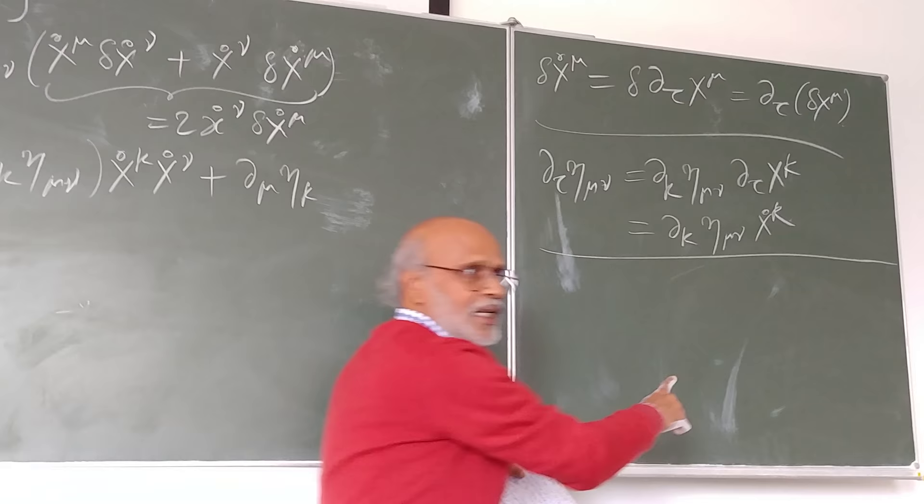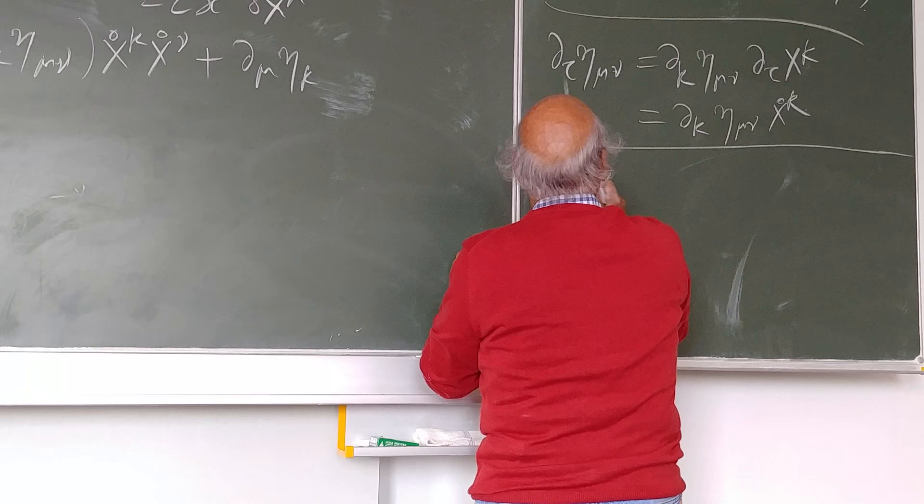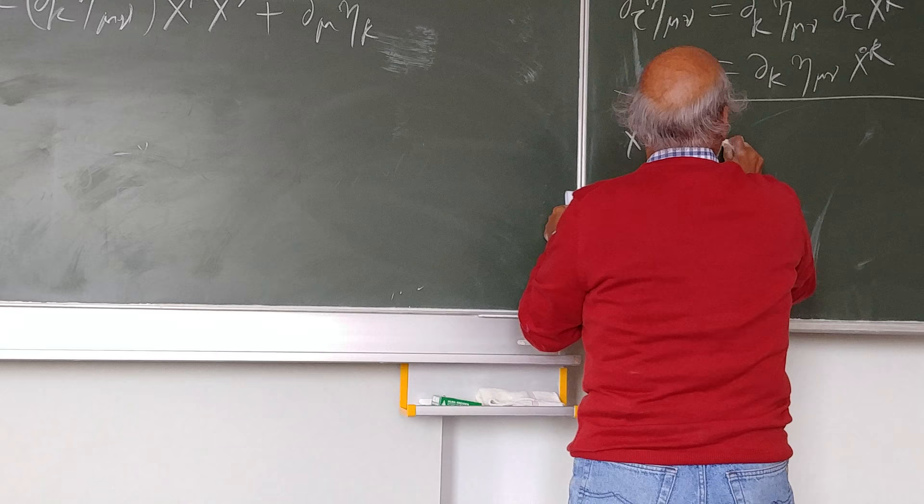Let me write one term separately here. And what is this term? This is x mu dot, this is x mu dot x mu dot times del k eta mu nu.